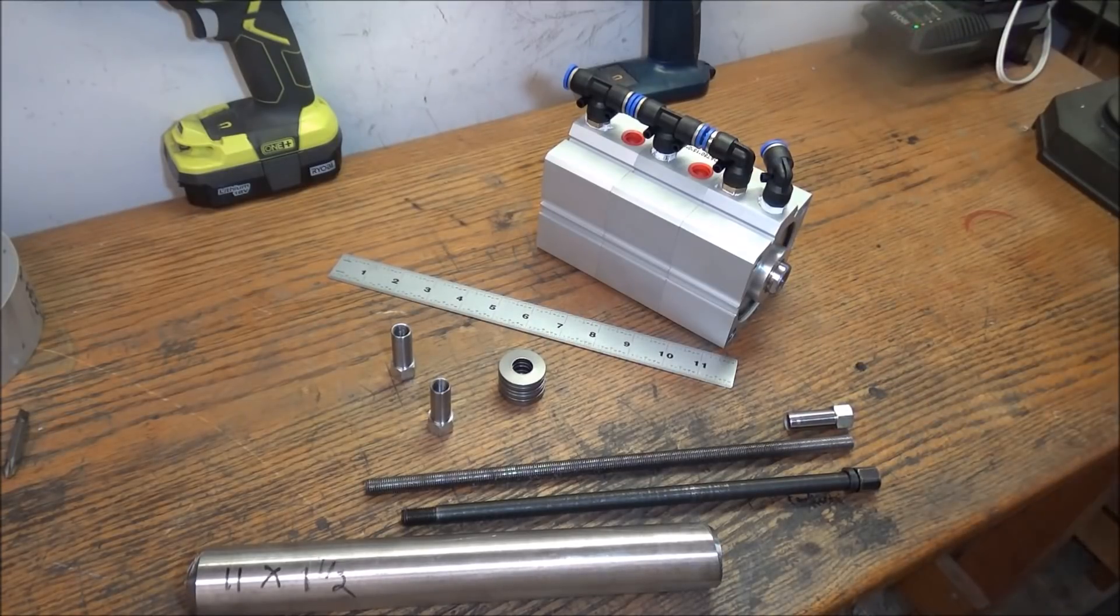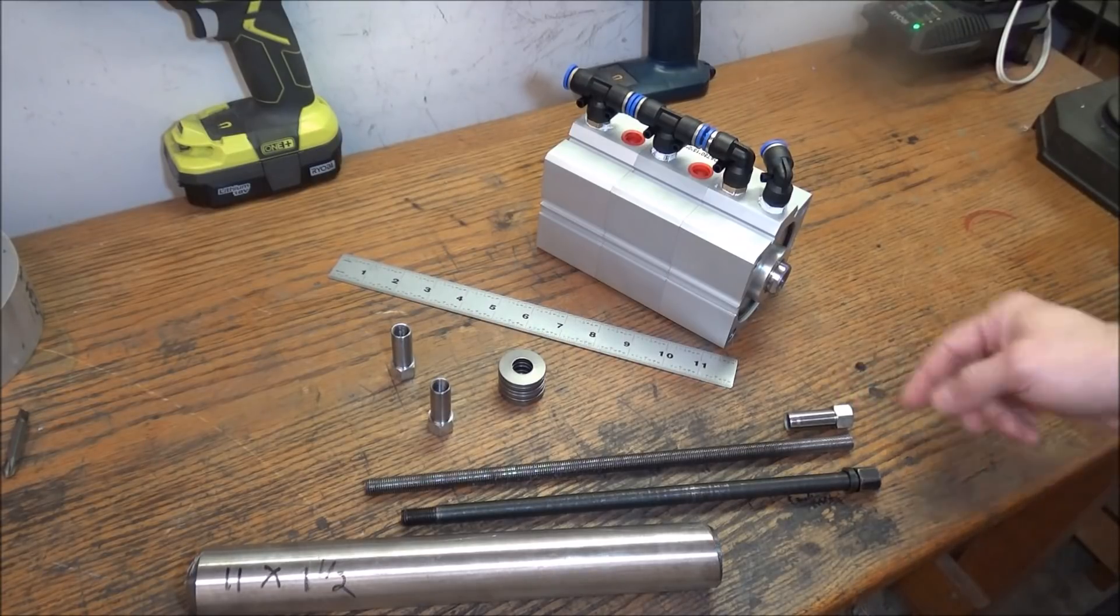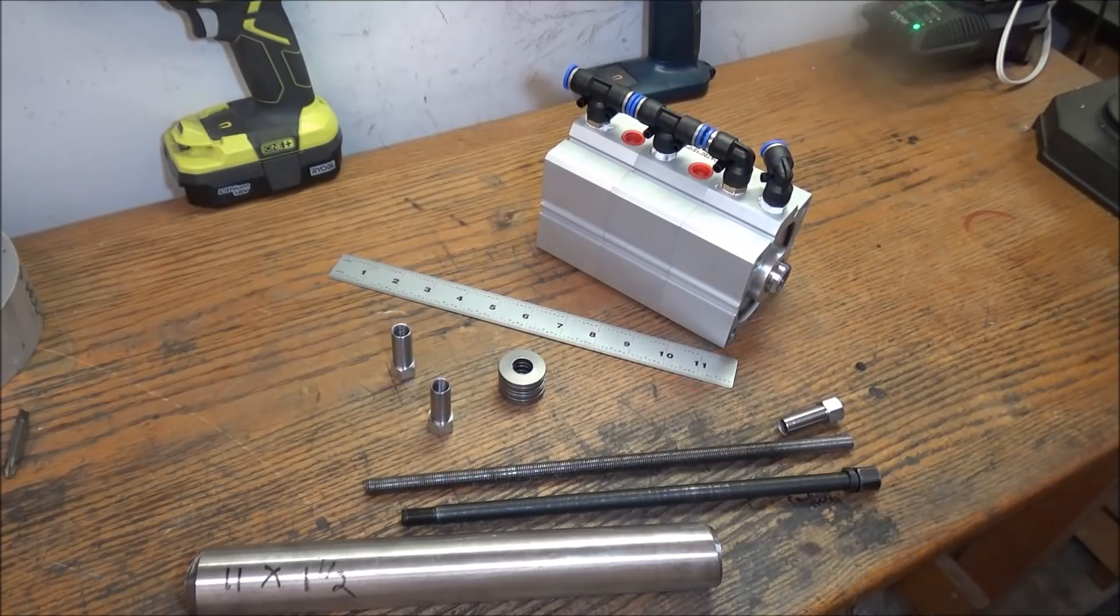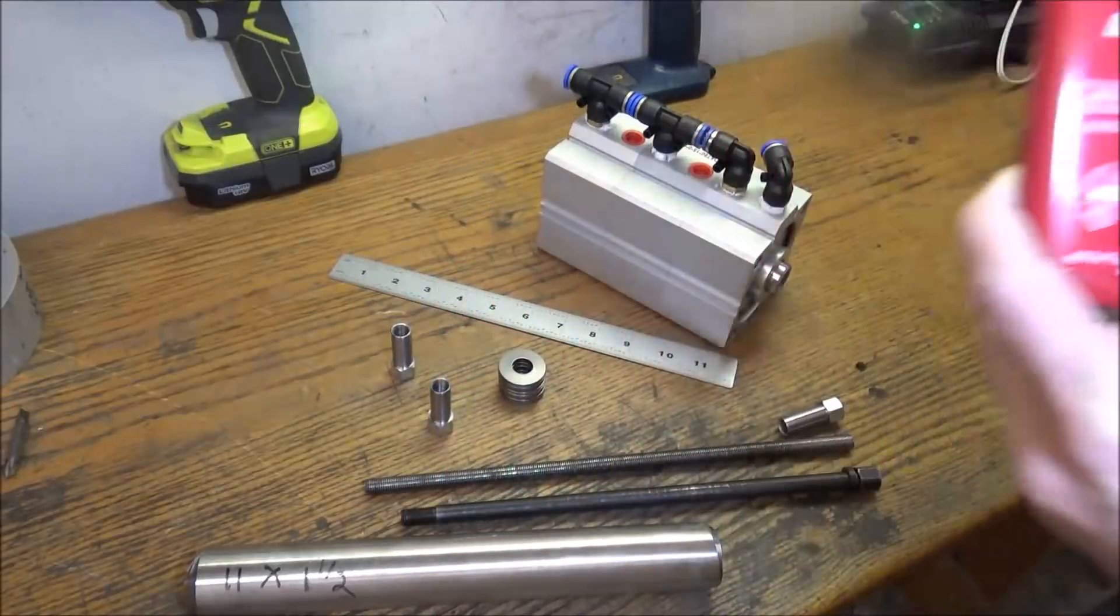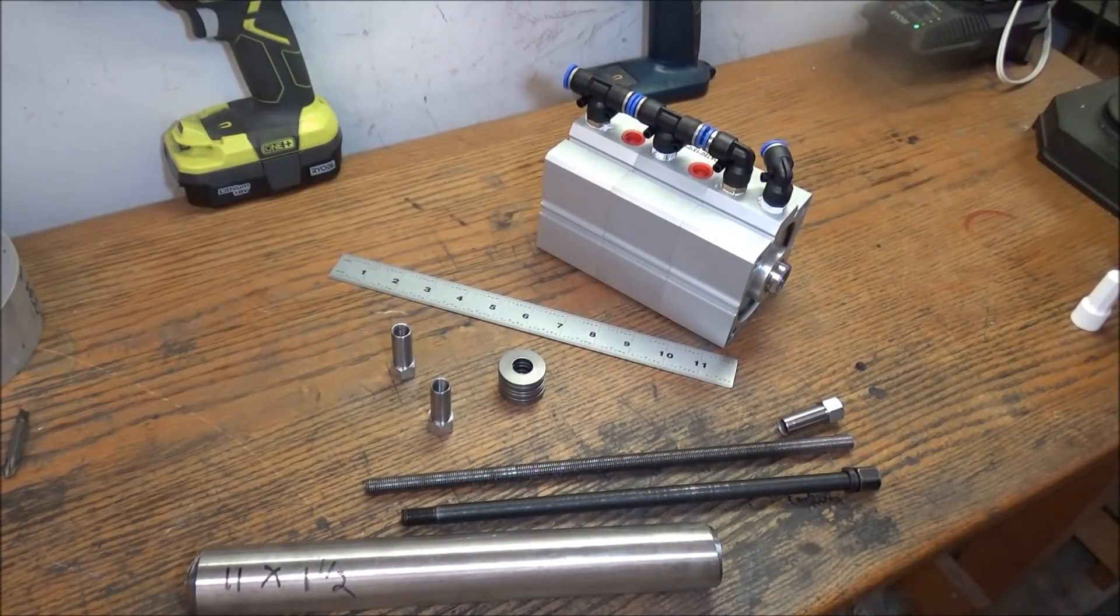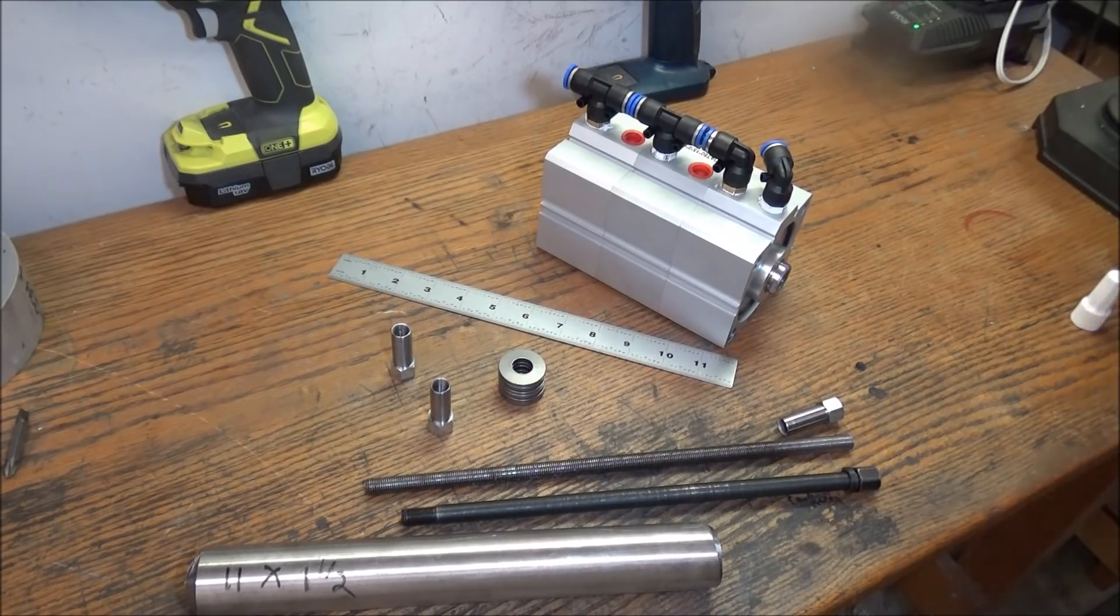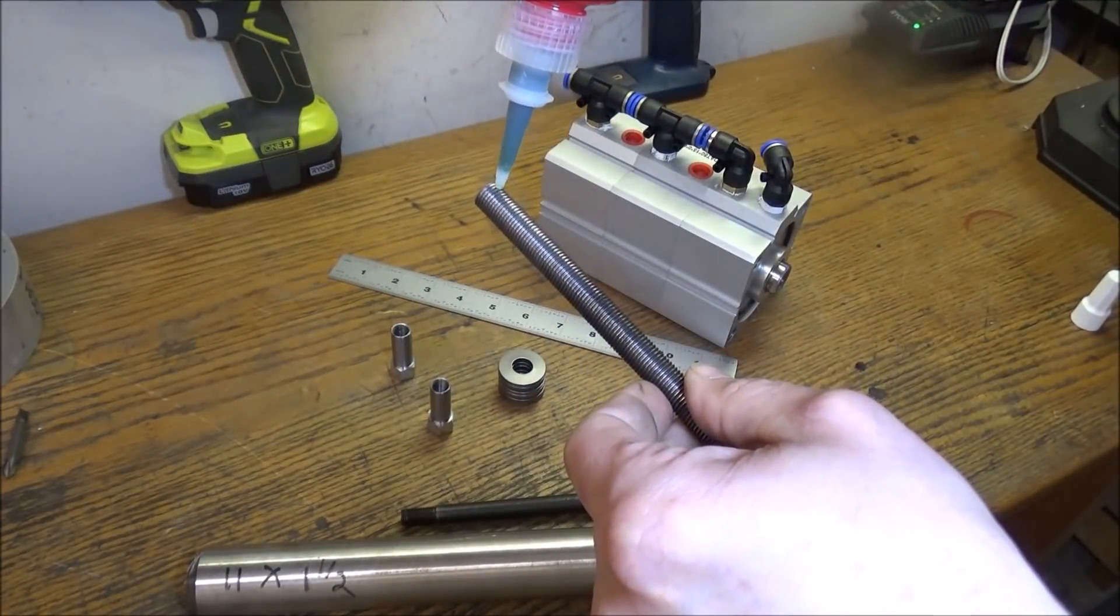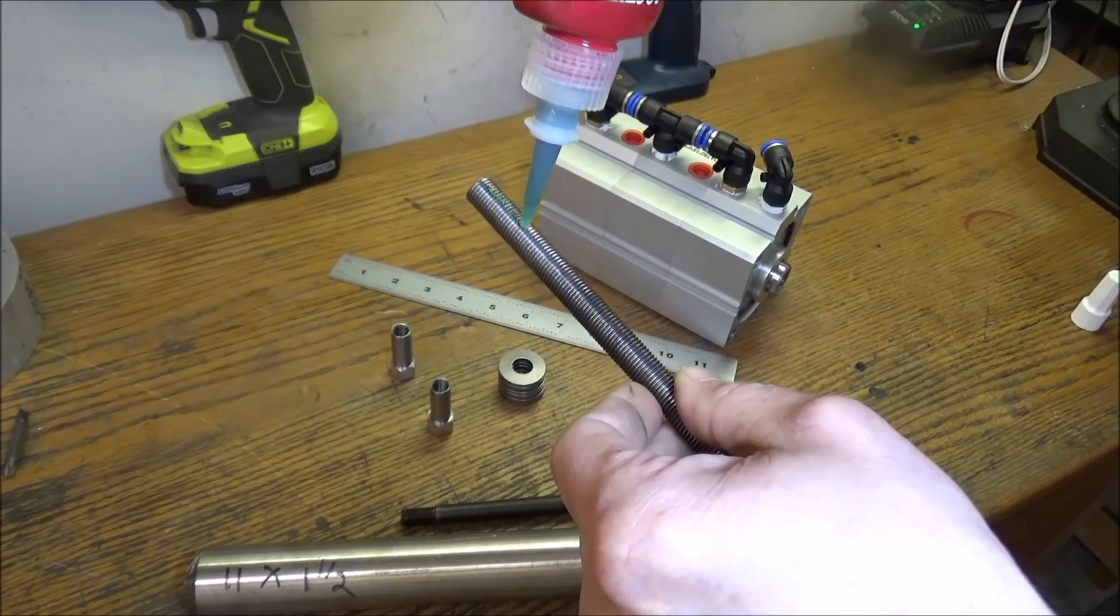And I'm going to Loctite it. I may come back and just put a weld at the top, but I don't think I'll need to. I'm going to be using this 638. This is a retaining compound. This stuff is high strength, and you'll need some heat to get it off. So I don't think it's going to really come off.